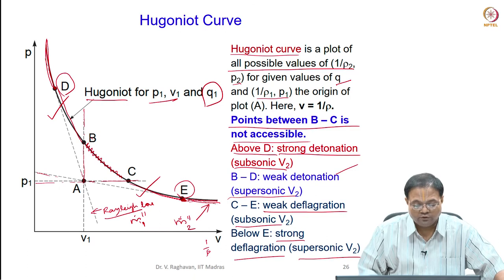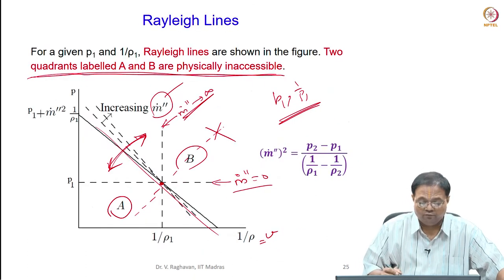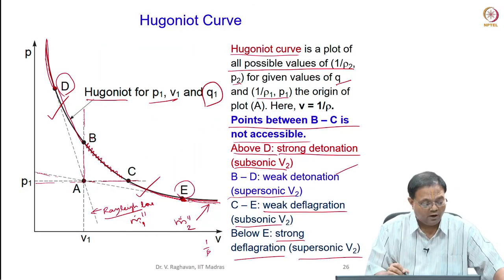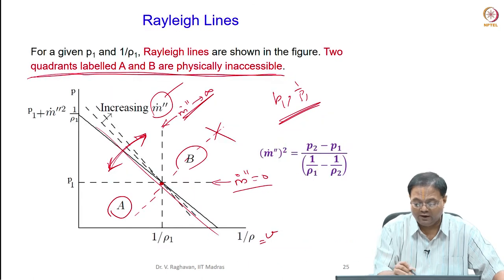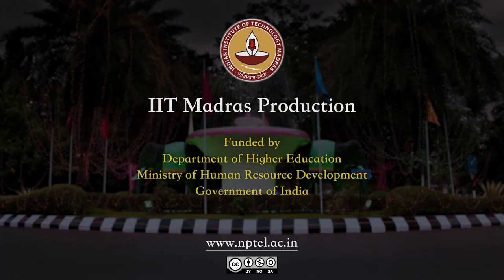So this is about the Hugoniot curve. Equation 8 is plotted to give the Hugoniot curve, and the Rayleigh line comes from equation 5.